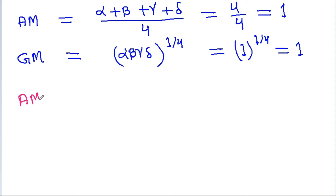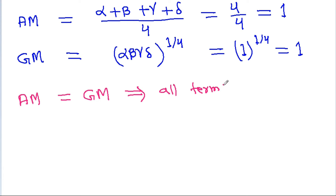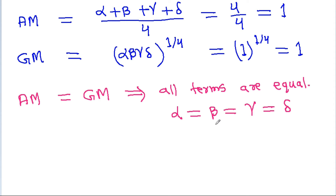If AM = GM, it means all terms are equal. So AM = GM = 1, which means alpha = beta = gamma = delta = 1, since their sum is 4 and product is 1.